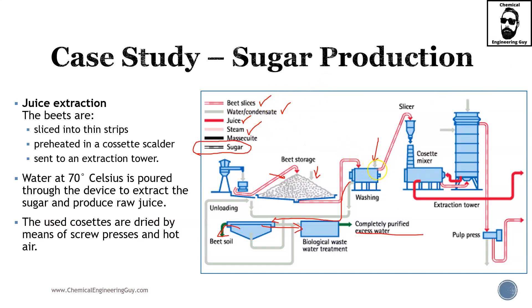Now that the beets are cleaned up, they go to the slicer. The slicer just changes their shape — no chemical reaction — we simply want to make them into smaller pieces. They are then preheated in a cosset scalder which has a screw mechanism to move material through. What we want to do next is remove the juices.